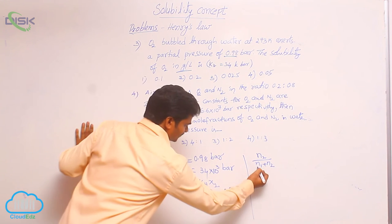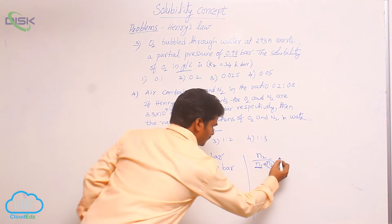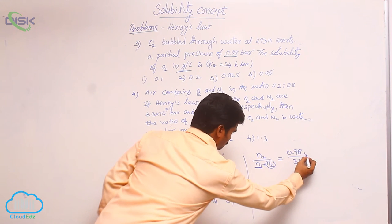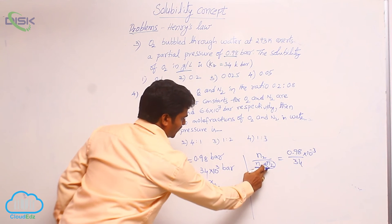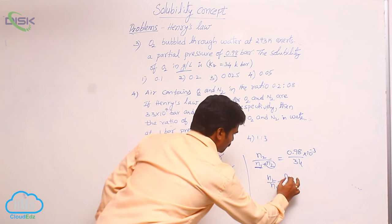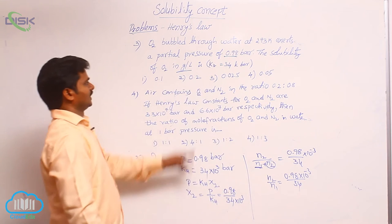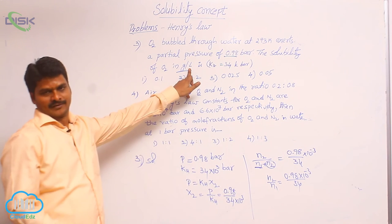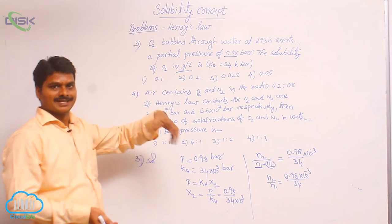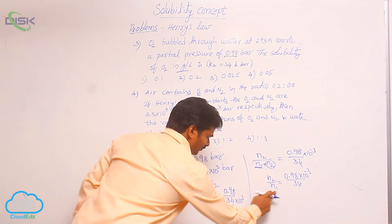So, in comparison with solvent, we can ignore n2. Therefore, n2 by n1 is equal to 0.98 by 34 into 10 power minus 3. If we ignore n2 in the denominator, then n2 by n1 equals 0.98 into 10 power minus 3 by 34. What is n1? In 1 liter of solvent, for pure water the density is taken as 1, so 1 liter water means 1 kg water, that means 1000 grams water.